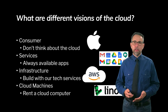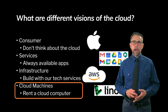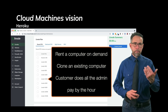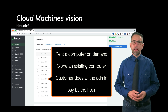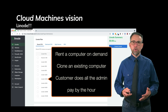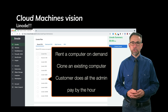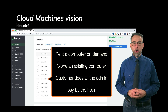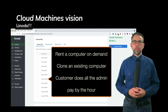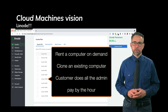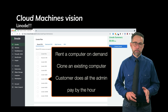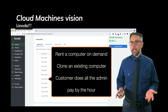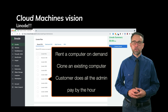Finally, as an example of the fourth vision — a cloud machine vision — I would point to Linode. Linode is one of many companies that will give you a computer temporarily. Amazon will do this too, but this is Linode's bread and butter. They will enable you to rent a computer on demand or clone an existing one that you have. The difference is that you're responsible for all of the administration — the security, the software updates, loading, passwords, everything. Sometimes that's what you need. Again, you pay by the hour for this kind of machine.